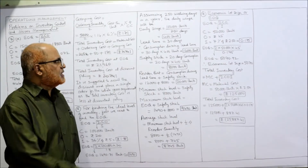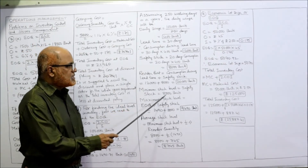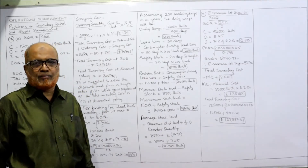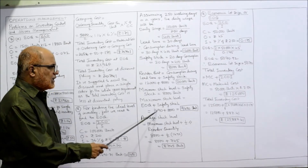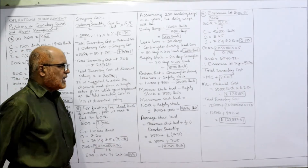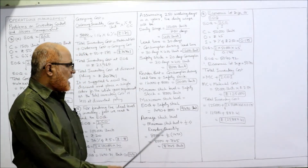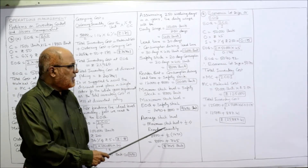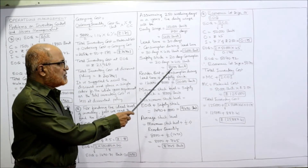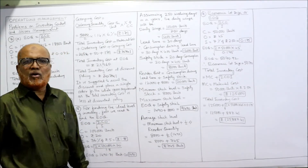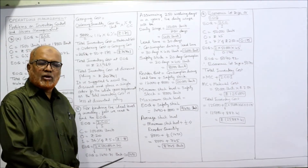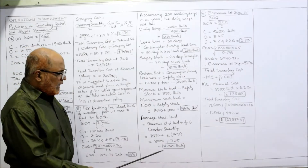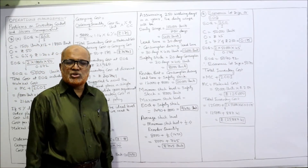Minimum stock level equals safety stock, which is 8,000 units. Maximum stock level equals EOQ plus safety stock equals 1490 plus 8000 equals 9,490 units. Average stock level equals minimum stock level plus half of EOQ equals 8000 plus 745 equals 8,745 units.